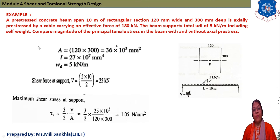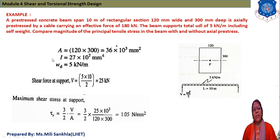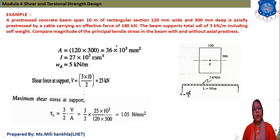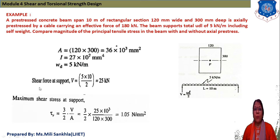First, we find the area of section: A = 120 × 300 = 36 × 10³ mm². Then the moment of inertia for a rectangular section: I = BD³/12 = (120 × 300³)/12 = 27 × 10⁷ mm⁴. With UDL of 5 kN/m, the shear force at support is V = WL/2 = 5 × 10/2 = 25 kN.